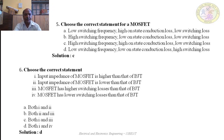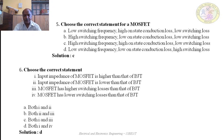Question 6: Choose the correct statement. Statements given: 1 — input impedance of MOSFET is higher than that of BJT; 2 — input impedance of MOSFET is lower than BJT; 3 — MOSFET has higher switching losses than BJT; 4 — MOSFET has lower switching losses than BJT. Options: A — 1 and 2; B — 2 and 3; C — 1 and 3; D — 1 and 4. The correct answer is D — MOSFET input impedance is higher than BJT, and MOSFET has lower switching losses than BJT.